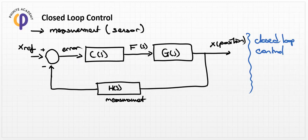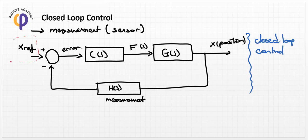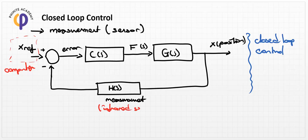In real life, we can generate the x_ref signal using a computer with software to create this reference diagram. For measurements in mechanical systems, an infrared sensor can be used. The C_s block corresponds to the driver or electrical circuit in real life application.